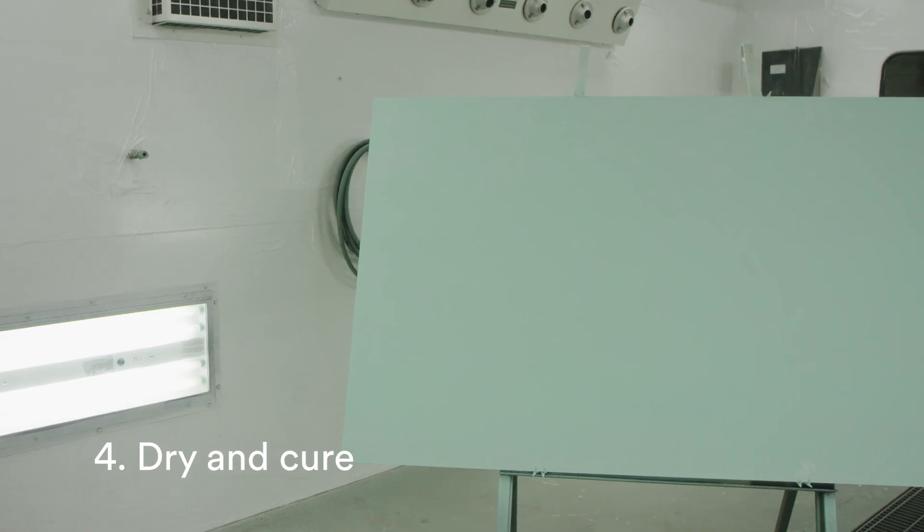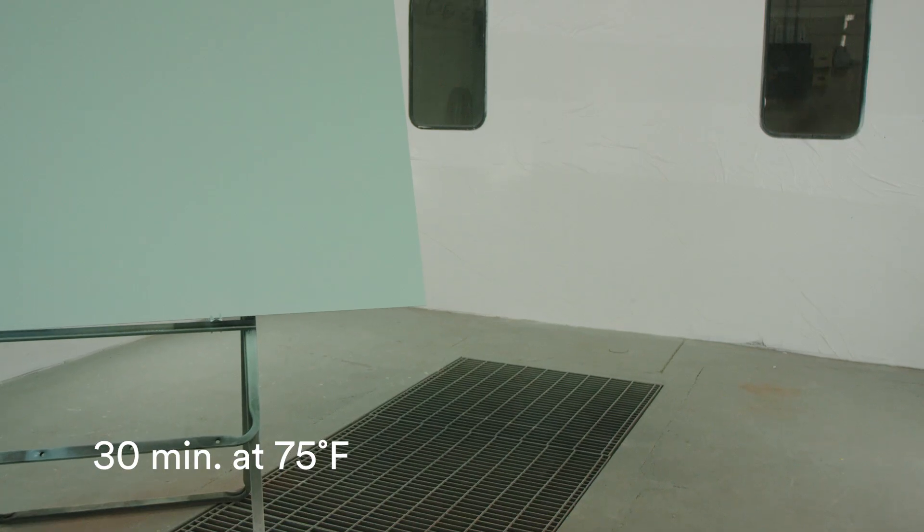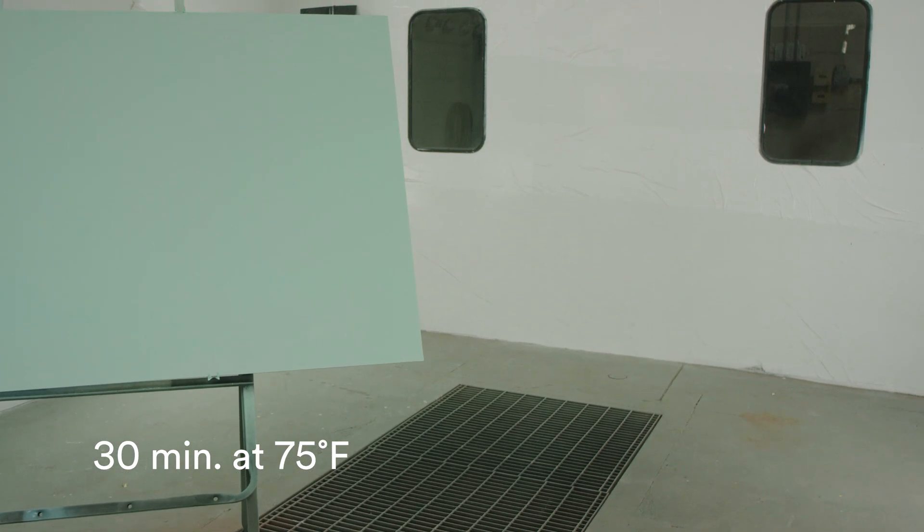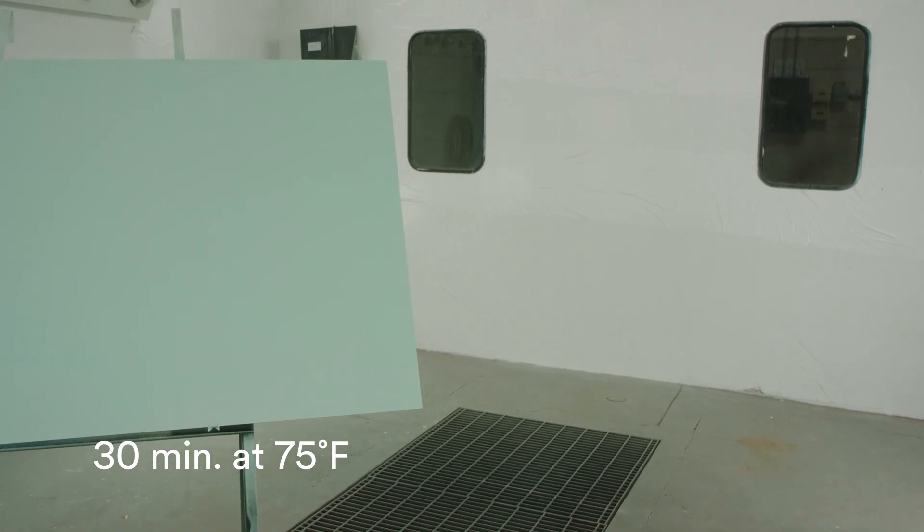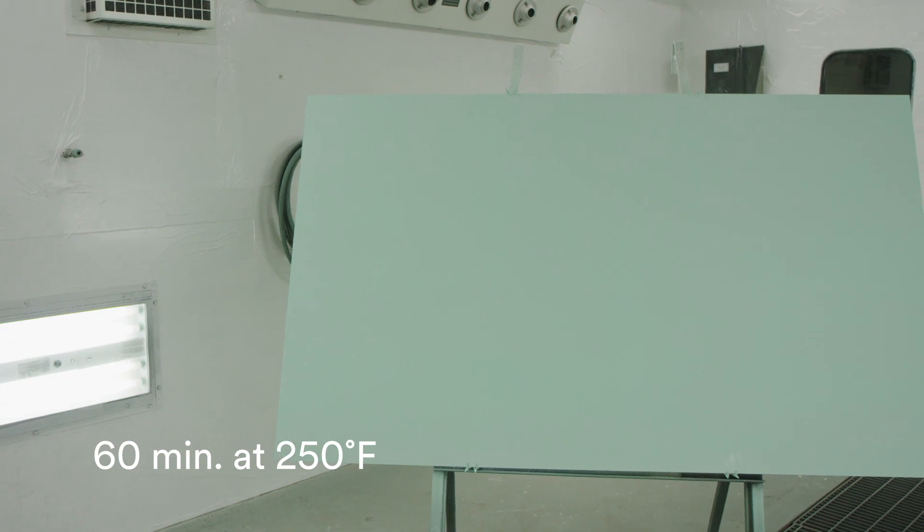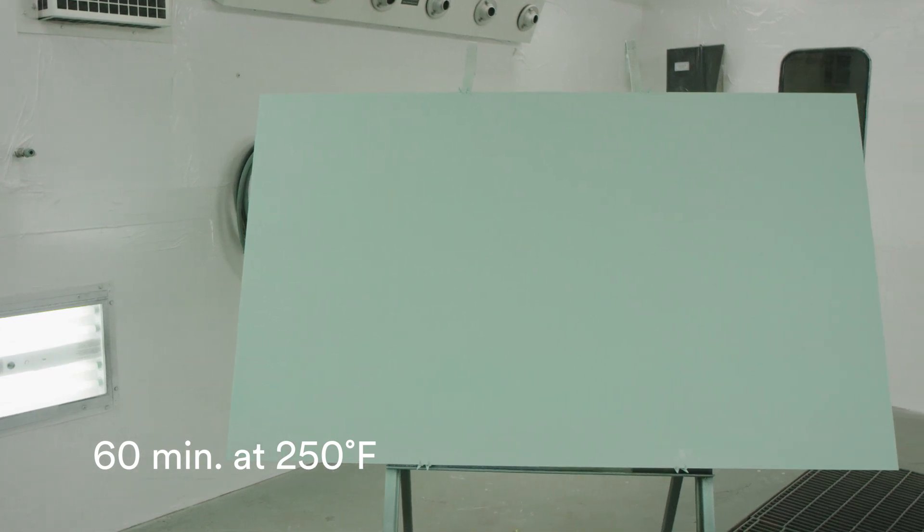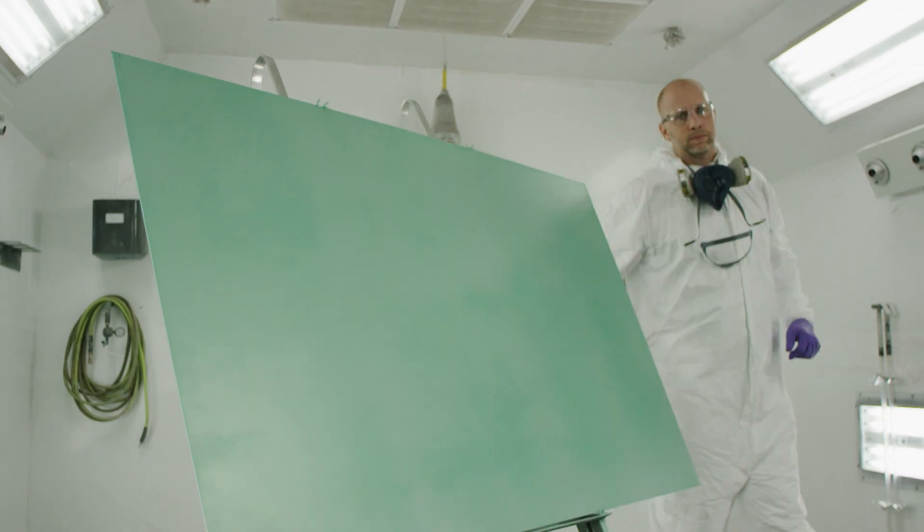After spraying the EW5005, parts should air dry for 30 minutes at 75 degrees Fahrenheit, followed by a bake cycle of 60 minutes at 250 degrees Fahrenheit. Now the panel is primed and ready for adhesive bonding.